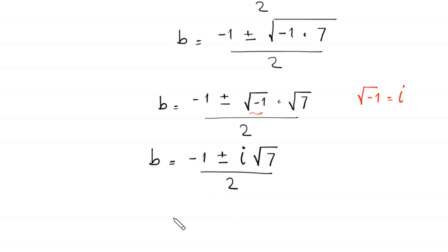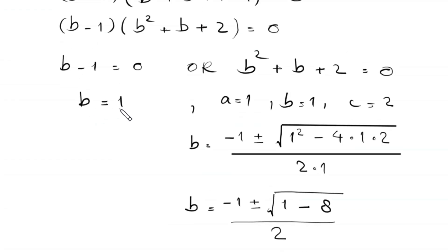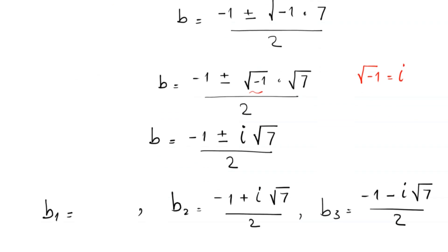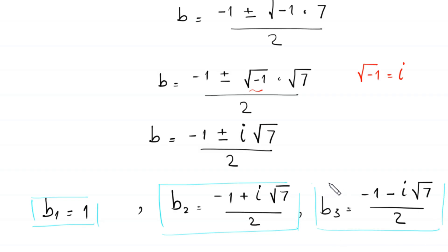From here we get two complex values: b2 equals (negative 1 plus i times root 7) divided by 2, and b3 equals (negative 1 minus i times root 7) divided by 2. Combined with the first solution b1 equals 1, we have three solutions to this equation: 1, (negative 1 plus i√7)/2, and (negative 1 minus i√7)/2.